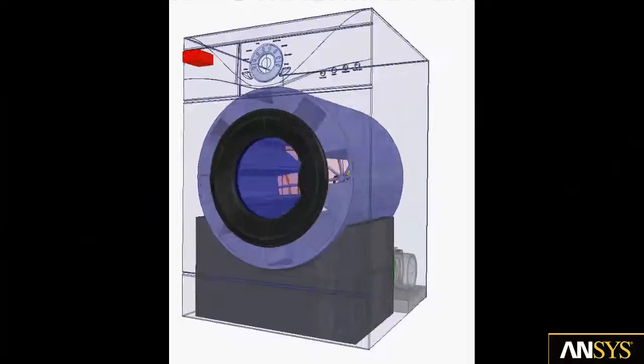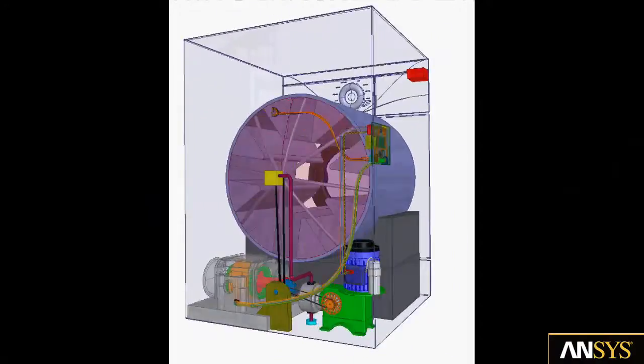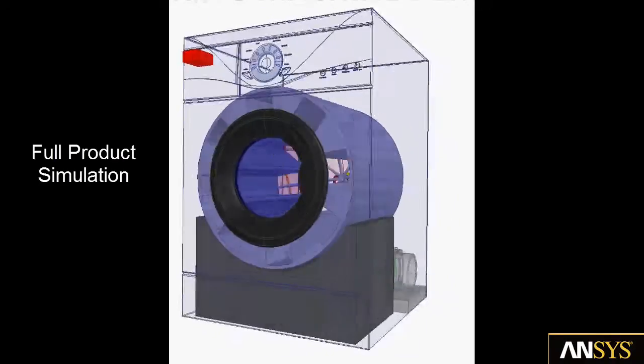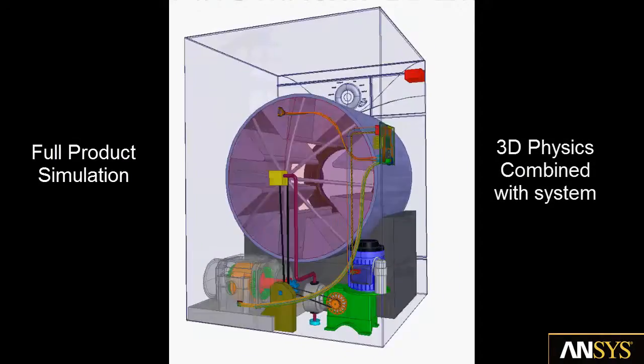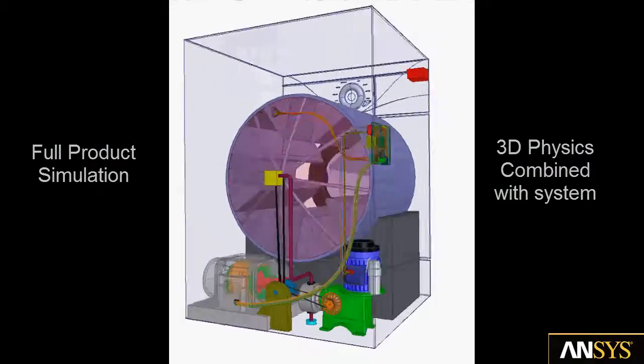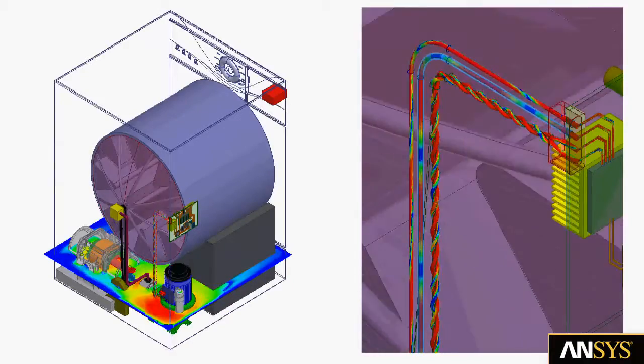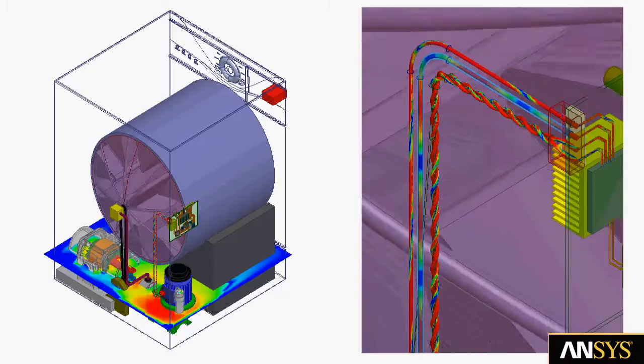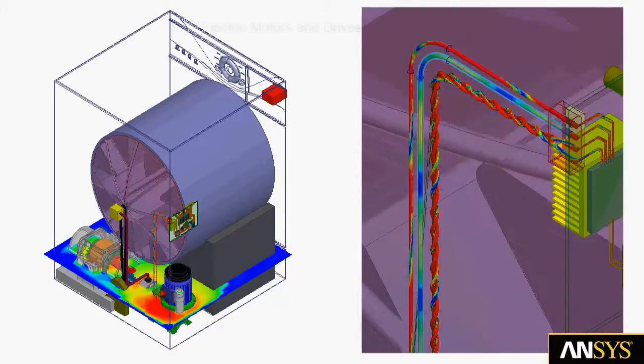In the next several minutes, we will demonstrate simulation technologies that enable full product simulation by combining 3D physics with system level analysis. The example is a washing machine that was created by ANSYS channel partner ESSS in Brazil.